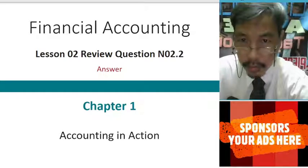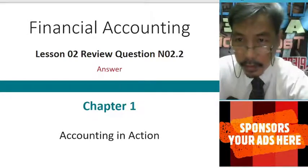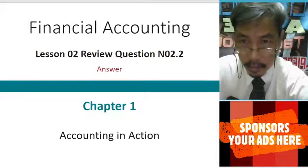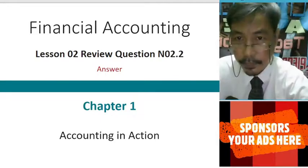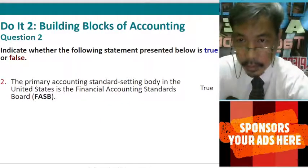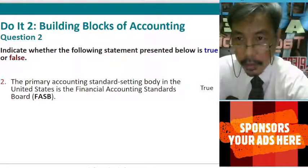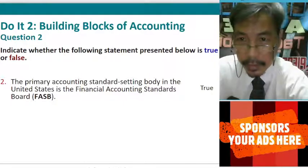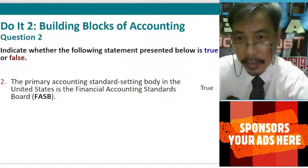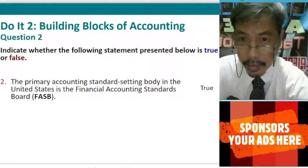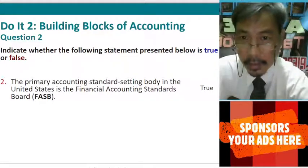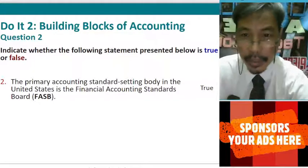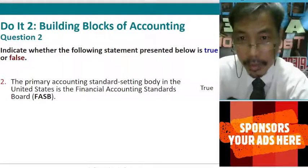In this video, let us answer question 2.2: whether the following statement is true or false — the primary accounting standard setting body in the United States is financial accounting standards. That is TRUE, and the primary standard is called GAAP, or Generally Accepted Accounting Principles.